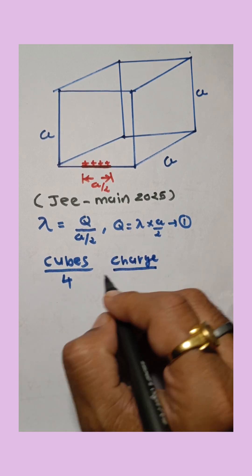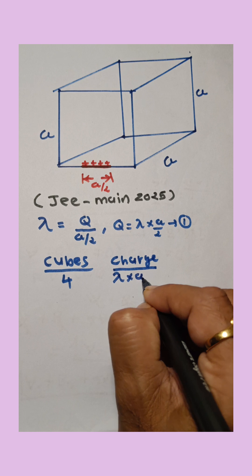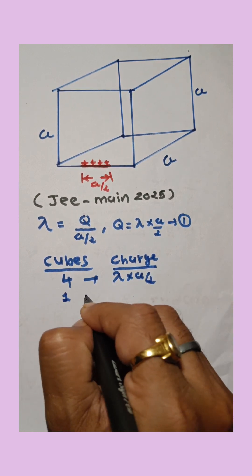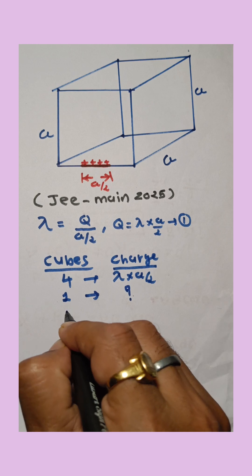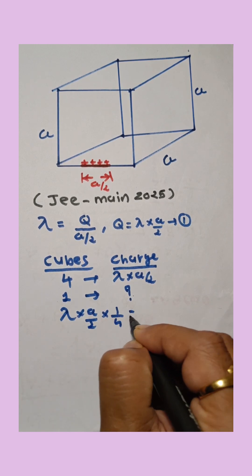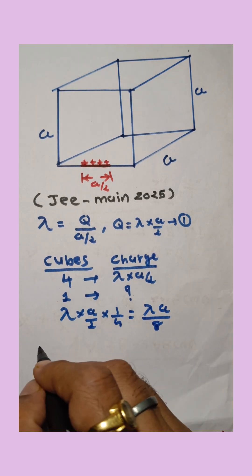The charge enclosed by these 4 cubes is lambda a/2. So charge enclosed by 1 cube is lambda times a/2 times 1/4, which is lambda a/8. Now from Gauss's theorem,